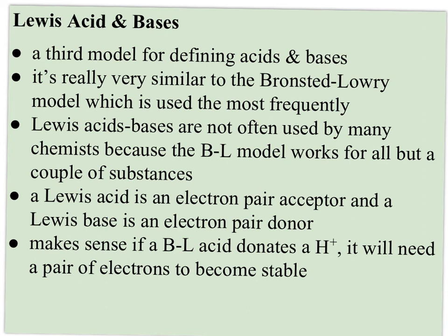Lewis acids and bases represent a third model. It's similar to Bronsted-Lowry, which is used most frequently by chemists. Lewis acids and bases aren't used very often because the Bronsted-Lowry model works for all but a couple of substances. Lewis theory redefines an acid as an electron pair acceptor and a base as an electron pair donor. It makes sense because a Bronsted-Lowry acid that donates H+ needs a pair of electrons to become stable, and something that accepts H+ usually has an electron pair to donate.